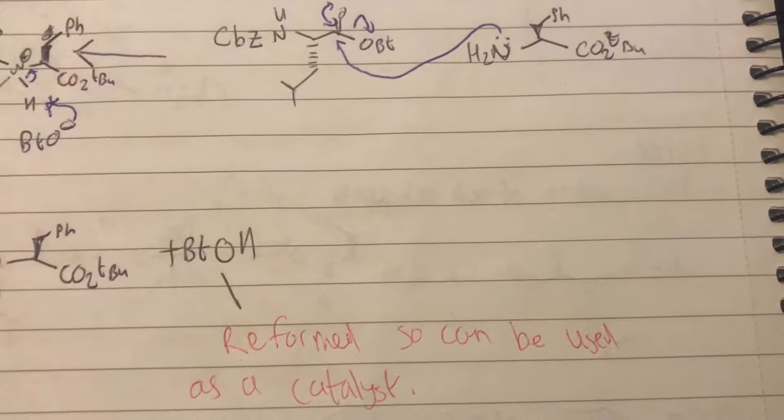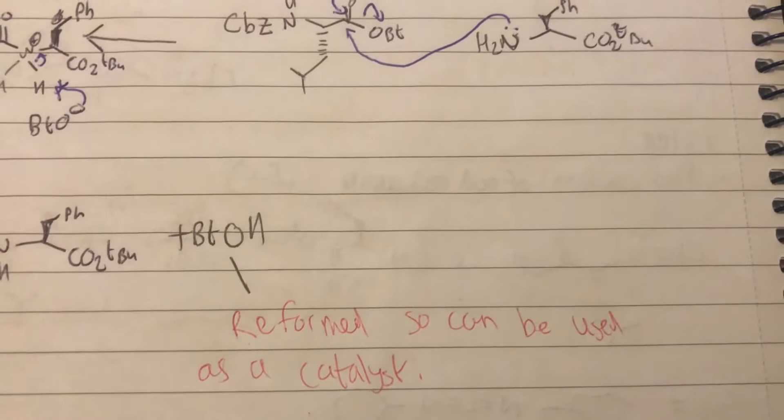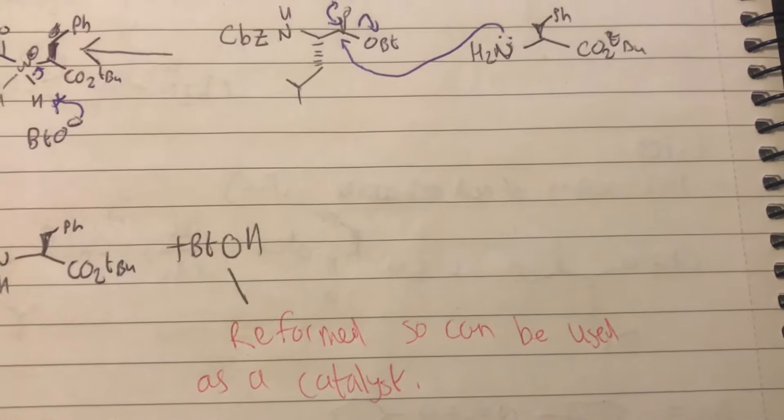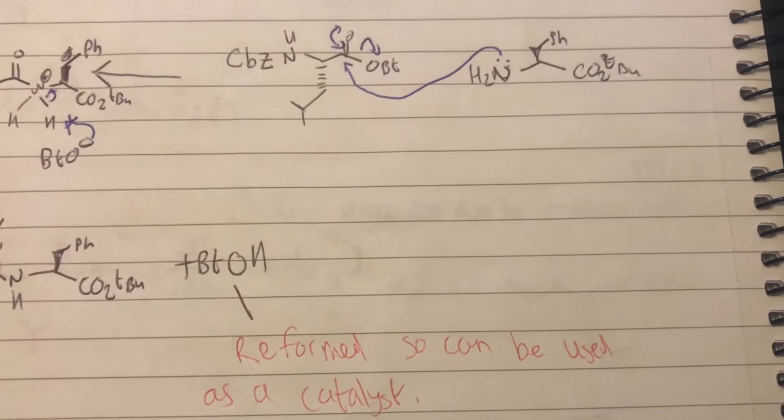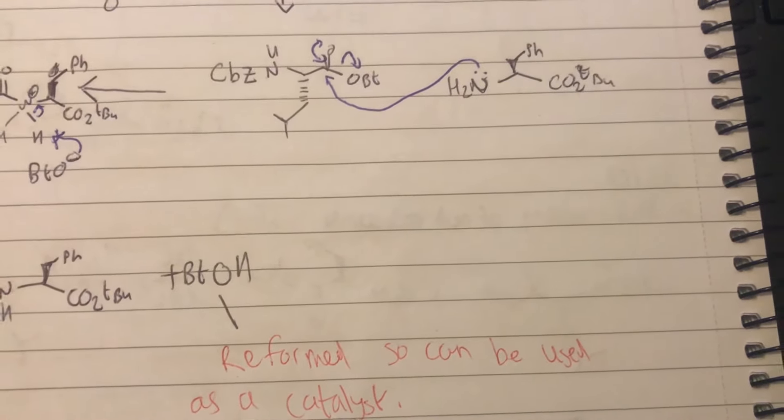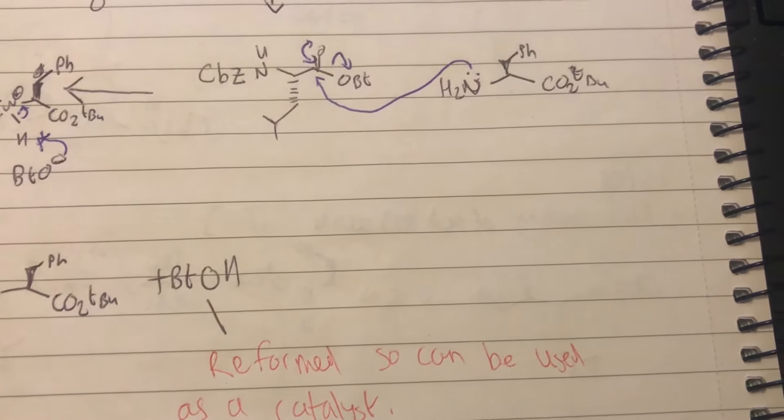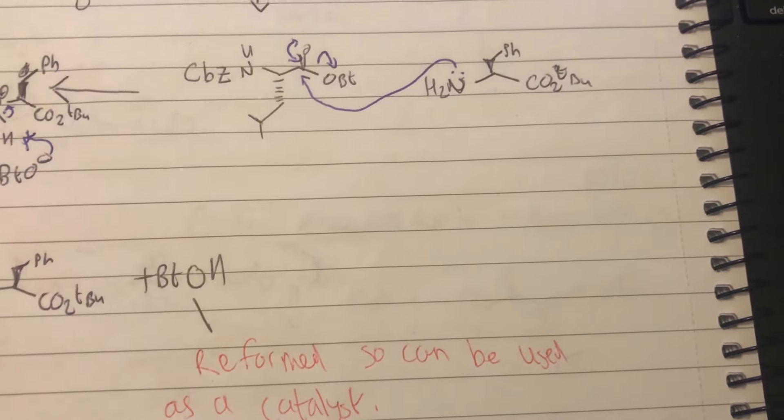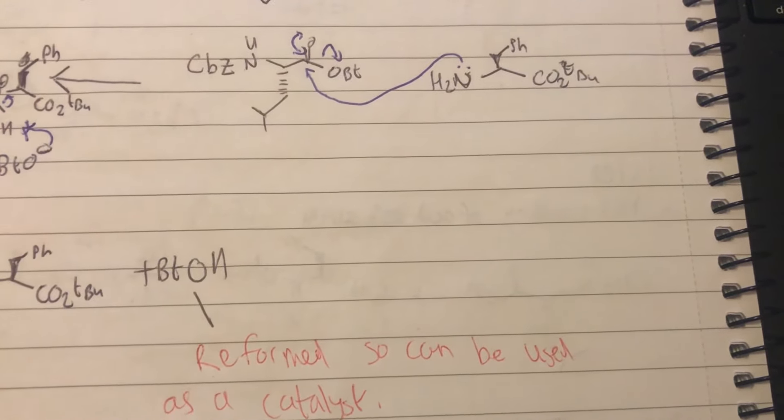BTOH is reformed, which is great, or HOBT is reformed so it can be used as a catalyst. That is the one-step and two-step mechanisms for forming a peptide bond. Next time we're going to be looking at racemic mixtures and how we can synthesize just a single isomer.